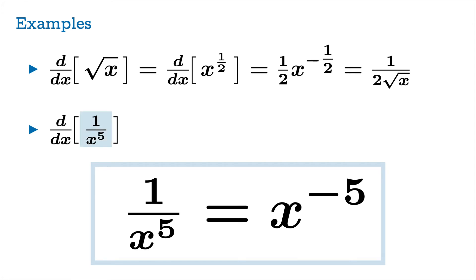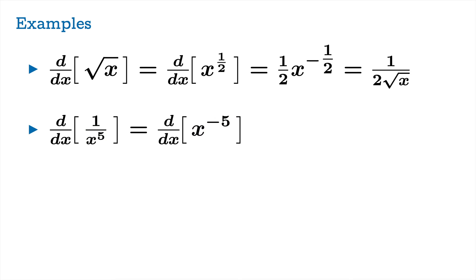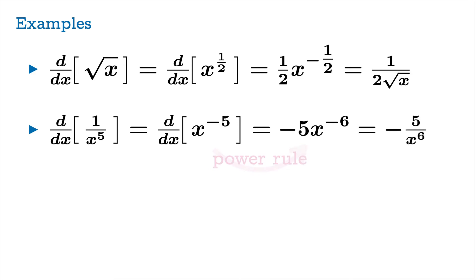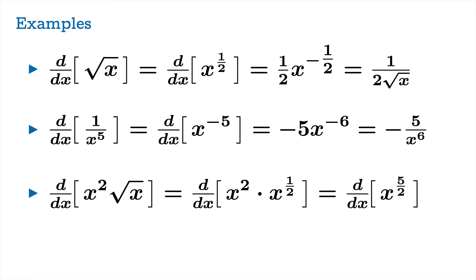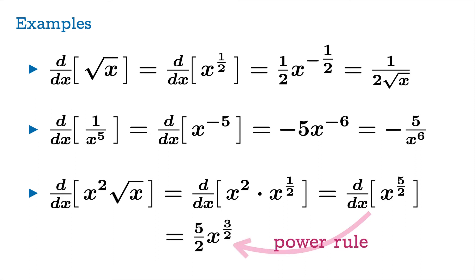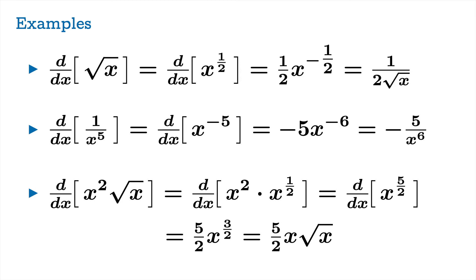The derivative of 1 over x to the fifth is the same as the derivative of x to the negative five. Applying the power rule for rational exponents, we pull down the power: negative five times x to the negative six, or negative 5 over x to the sixth. For the derivative of x squared times √x: rewriting as x to the 2 times x to the one-half, we add exponents to get x to the five-halves. The power rule gives five-halves times x to the three-halves, or equivalently five-halves times x√x.